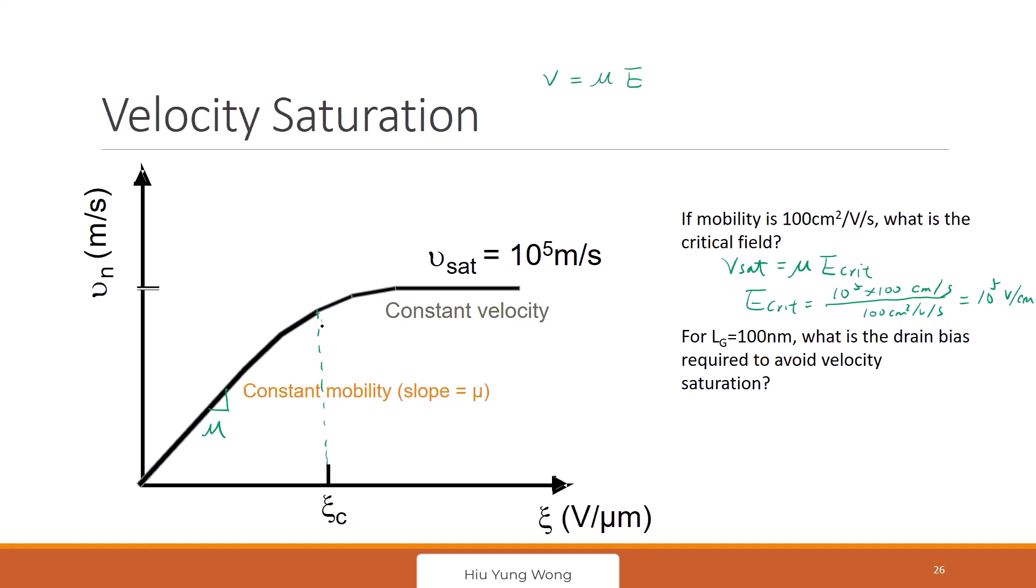So when will we hit this problem, velocity saturation? Think about 100 nanometer gate length. If I assume everything is even, then what is the drain voltage divided by 100 nanometer? Will give you 10 to the power of 5 volt per cm.